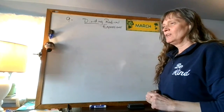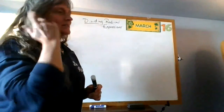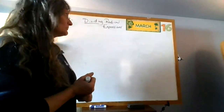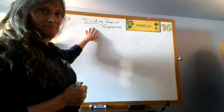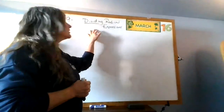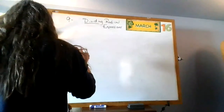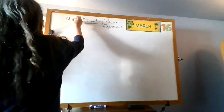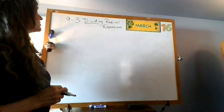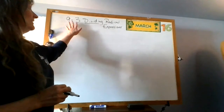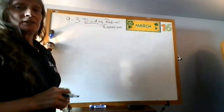So we are just going to move on. We did multiplying radical expressions last time, so today we are doing dividing radical expressions. And that is section 9-3, just like it was before, so we're doing 9-3 again. But this time, dividing radical expressions.